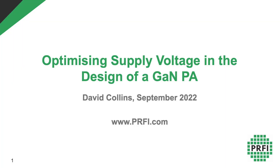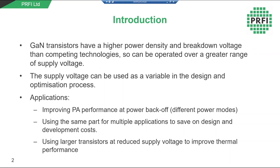We will discuss this through the design of a 1.5 watt 28-32 gigahertz MMIC power amplifier designed on a 0.15 micron GaN-on-SiC process. One of the advantages of GaN over competing technologies is that it has a higher breakdown voltage and power density, allowing the device to be operated over a greater range of supply voltages, with 20 and 28 volts typical for a GaN process.